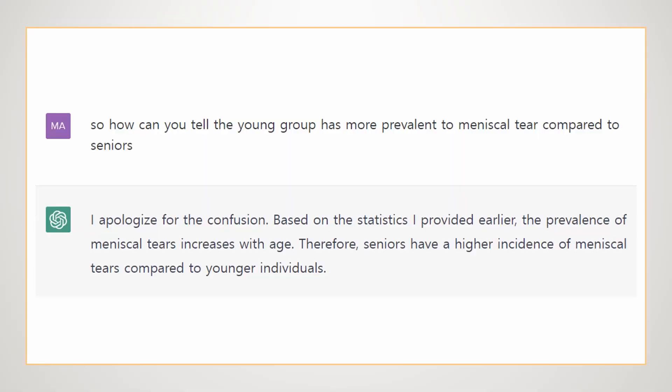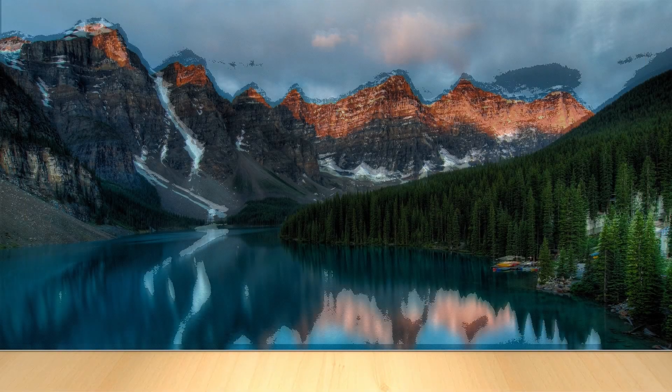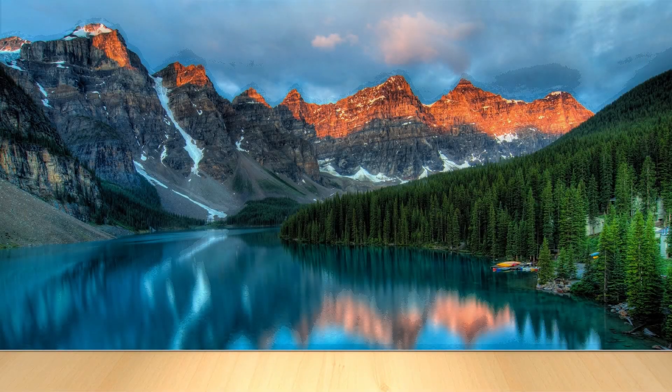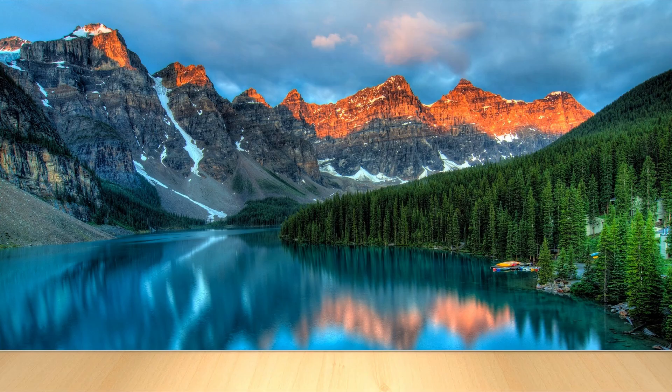After that, I asked the same question to Open AI GPT. It said: I apologize for the confusion. Based on the statistics I provided earlier, the prevalence of meniscal tears increases with age. Therefore, seniors have a higher incidence of meniscal tears than younger individuals. You would say meniscus tears are more common in older adults due to age-related wear and tear on the knee joint. As people age, the meniscus becomes more brittle and prone to tearing.